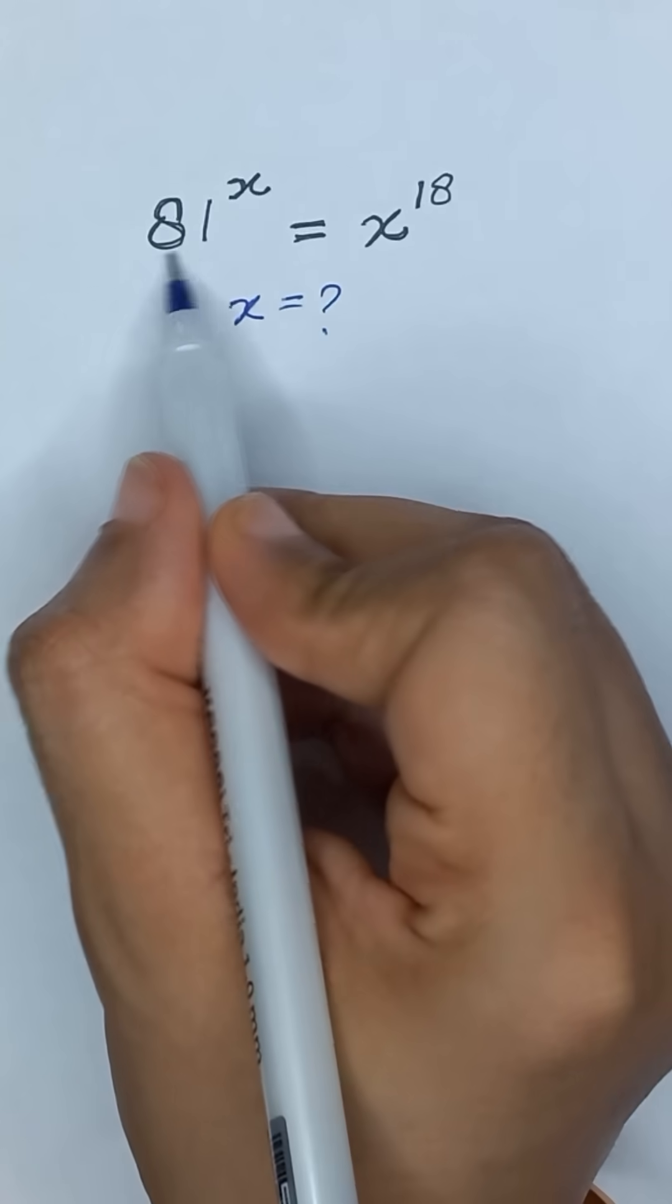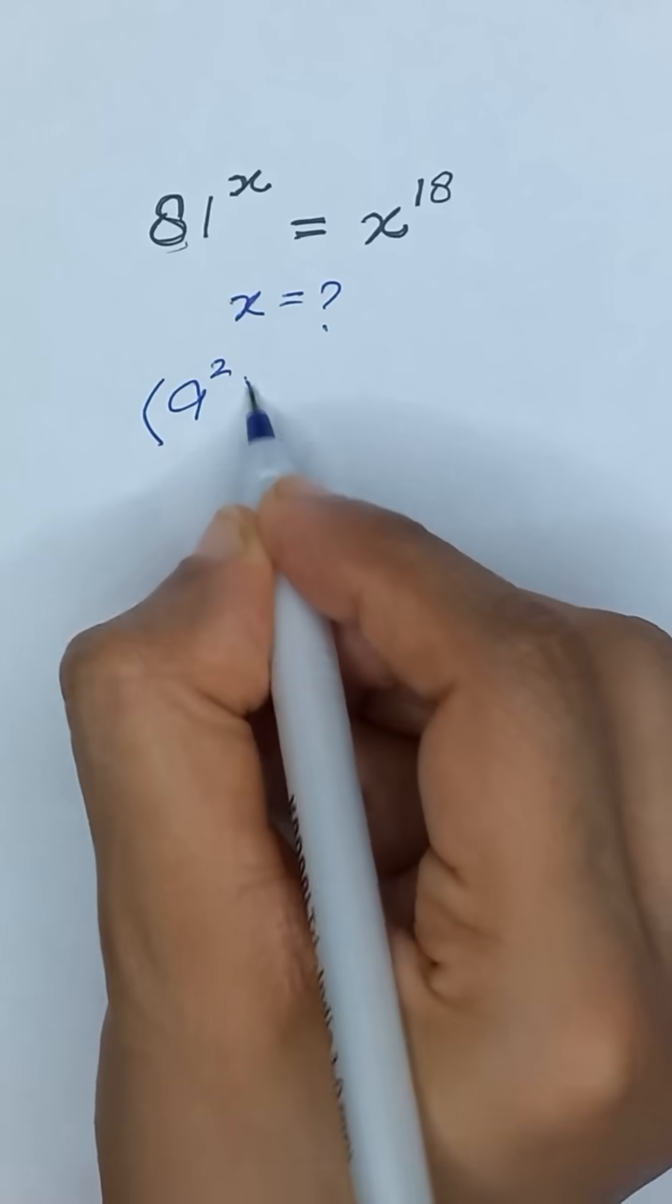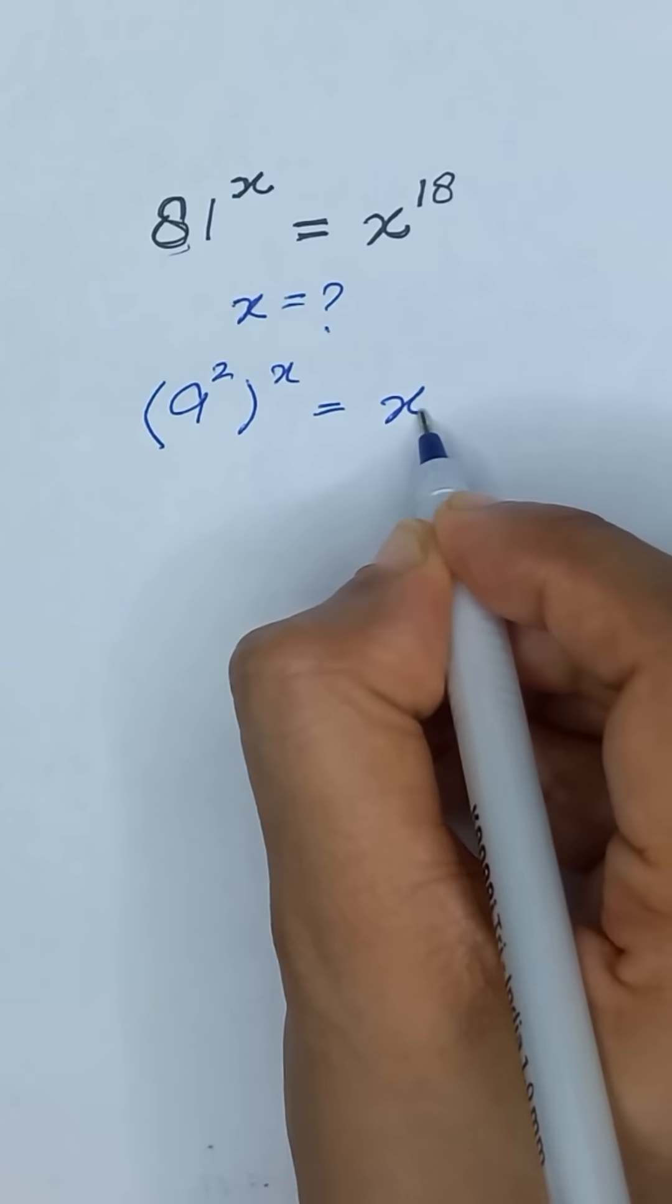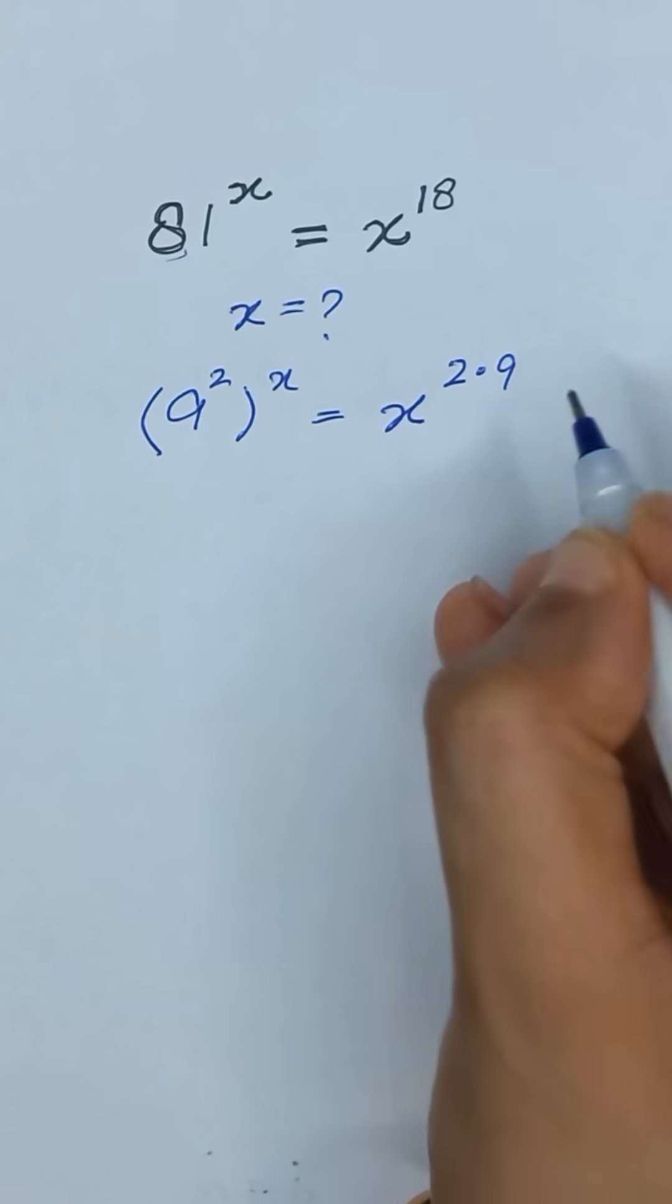So here we have 81. 81 is the same as 9 square, and its power x is equal to x to the power 18, which can be written as 2 times 9.